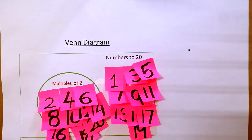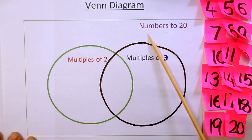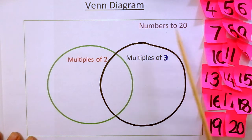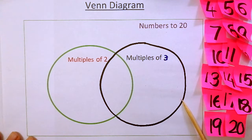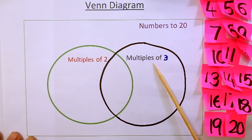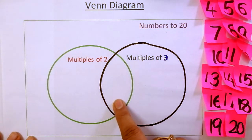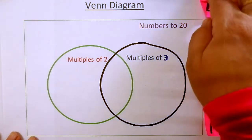Now let's work on a Venn diagram with two sorting rules. This diagram is titled 'Numbers 1 to 20,' so the set has 20 numbers and we need to make two groups. One circle is labeled 'multiples of two' and the other is labeled 'multiples of three.' The two circles intersect, meaning some numbers may be common multiples and will be placed in the overlapping area.